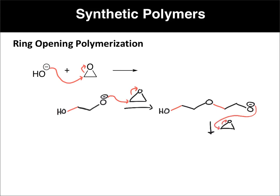So in the ring opening polymerization, the attack opens the epoxide each time. If you're going to draw the polymer unit: here are the basic pieces that come from the epoxide — the two carbons and the oxygen. Here's where a new bond is formed on each side. So then we take that, draw our parentheses, and put an N.